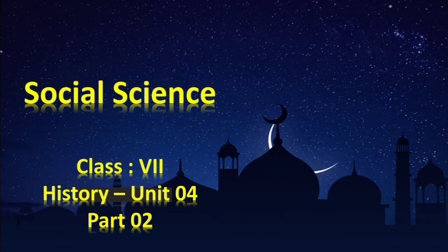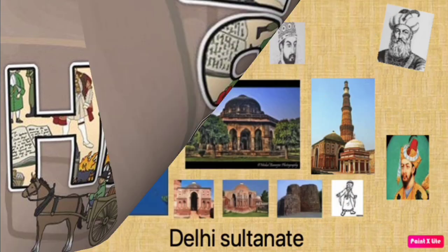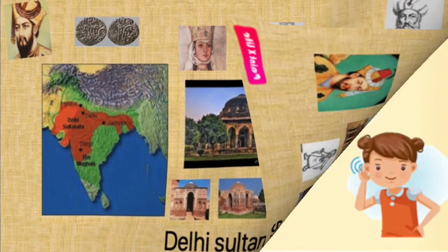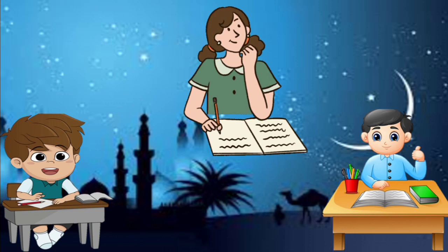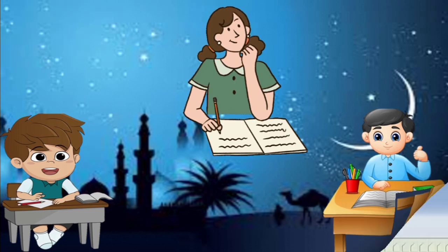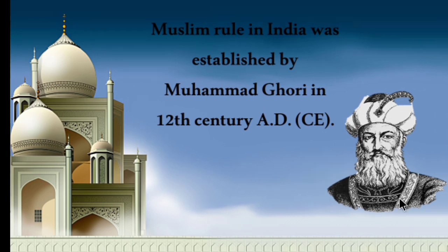Good morning students. This is session 2 of 7th Standard Social Science, History, 4th Unit — the Delhi Sultanate. Listen carefully to this session. In case of any doubts, make a note of it, which shall be clarified on the day of reopening. In the previous class, we saw that Muslim rule in India was established by Mohammed Gori in the 12th century AD.